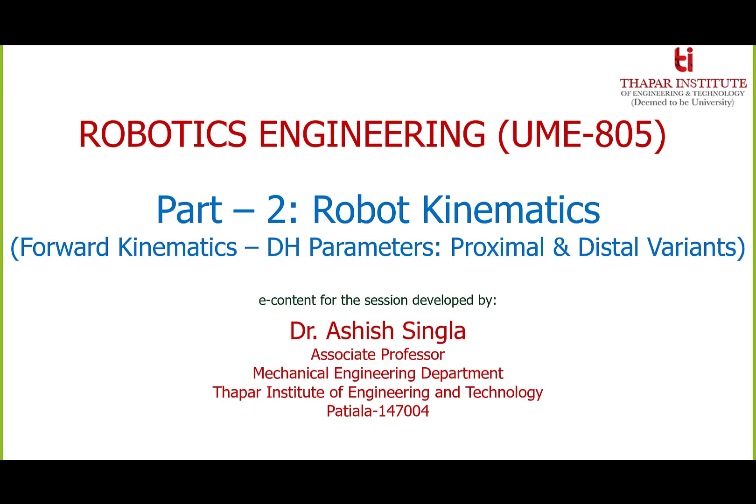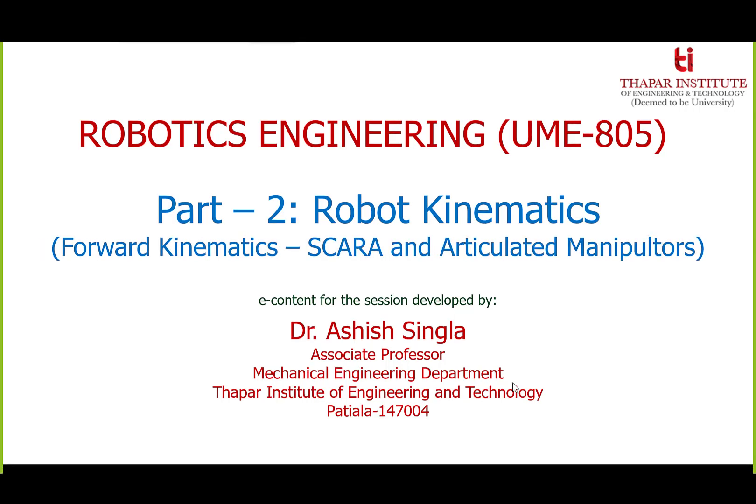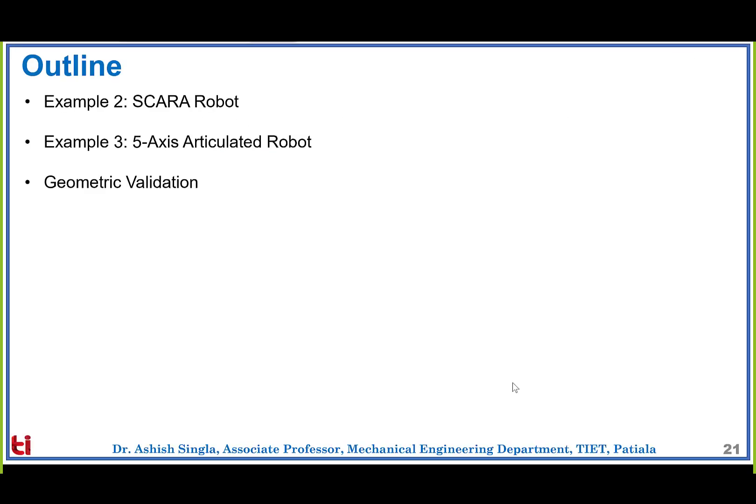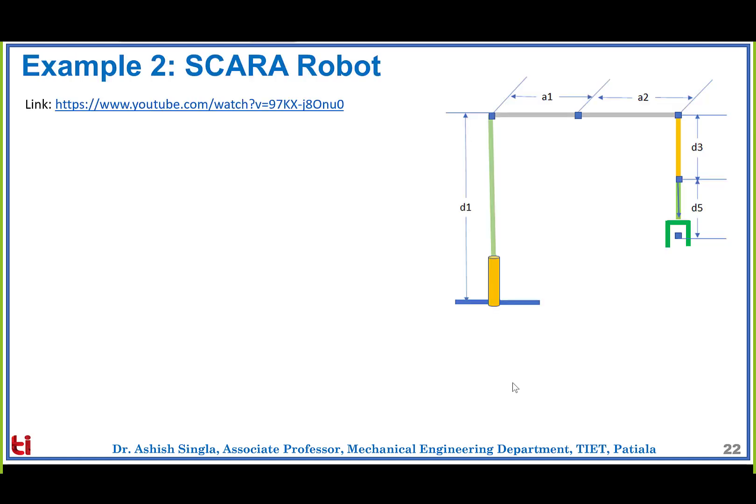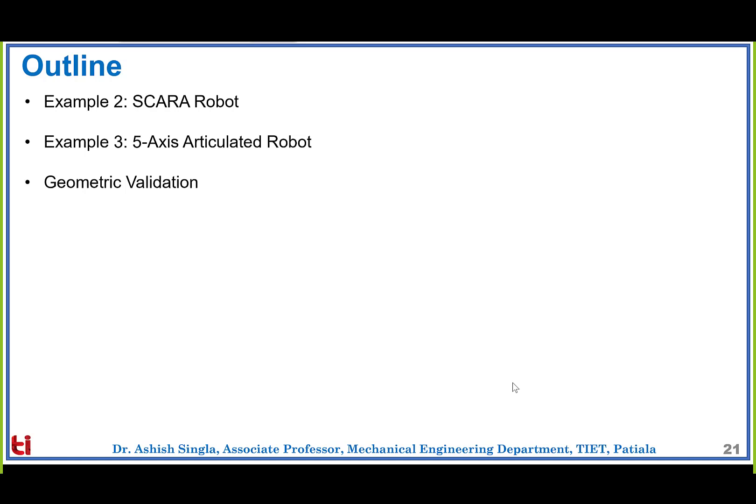Good morning. In this session we are going to discuss forward kinematics, specifically the DH parameters of two popularly known manipulators: the SCARA robot and the articulated robot. First we will discuss the SCARA robot, then the 5-axis articulated robot, and eventually we will do the geometrical validation of both robots.